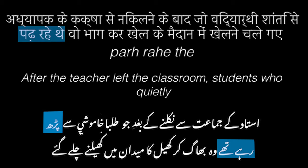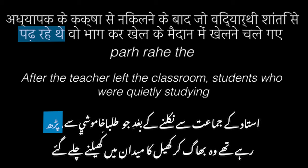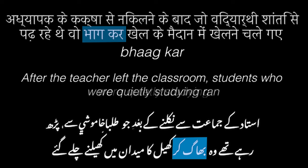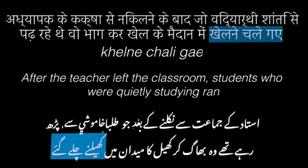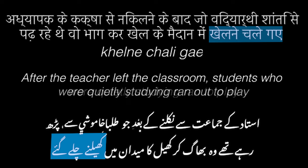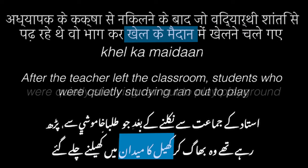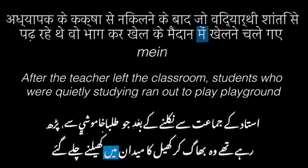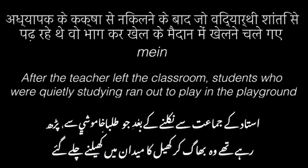Parna means to read, but it can also mean to study, and parhe the is the past continuous meaning was studying. Now we have: after the teacher left the classroom, children who were studying quietly. Bhaag kar is the verb bhagna meaning to run, followed by kar which is a conjunctive form, meaning it's joined to another verb — khelne chale gaye at the end of the sentence. Khelna means to play, and adding ne makes it an infinitive. Chalna means to walk, move or go, and adding ge puts it in the future tense. Khel ka maidan means a playground, literally playing field, and mein means in. So overall, the sentence means: after the teacher left the classroom, children who were studying quietly ran out to the playground.